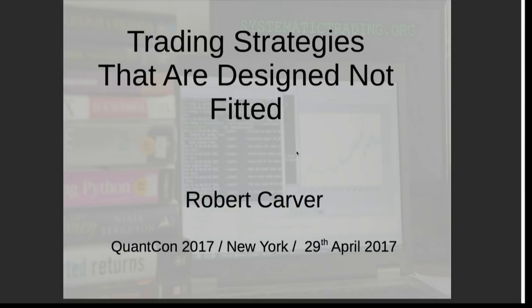I want you to imagine for a moment that we manufactured cars the same way that most people create trading strategies. We'd have the GM or Ford factory with all these parts bins everywhere. Robots would pull out random combinations of parts and assemble them into cars — some with one wheel, some with no steering wheel, some with the engine in the back seat not connected to anything. You'd line them all up, make them do a quarter-mile drag race, and pick the fastest one. I mean, it sounds kind of nuts, but that's a pretty good metaphor for the way we create trading strategies.